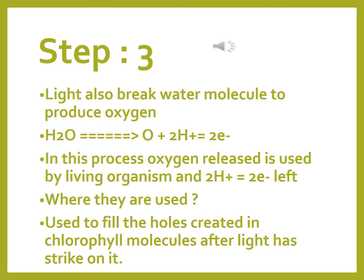In the same photosystem, that is photosystem 2, light also breaks the water molecule to produce oxygen. Here you can see the equation: water (H₂O) is broken down, oxygen is liberated — and we inhale this oxygen — and 2 protons equivalent to 2 electrons are left. The oxygen released is used by living organisms, and the 2 electrons left are used to fill the holes created in the chlorophyll molecules after light has struck it. So these 2 electrons from water are used to fill the holes of the chlorophyll molecule.